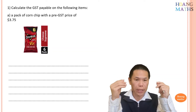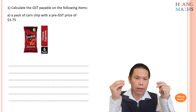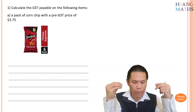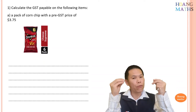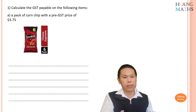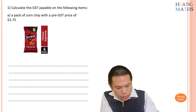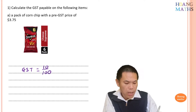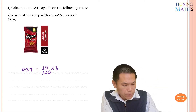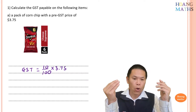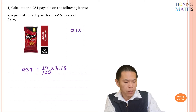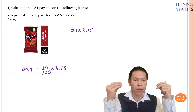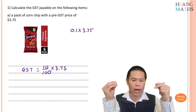The first example: calculate the GST payable on an item that costs $3.75. That price is before GST, so we need to work out how much tax we have to pay. GST is equal to 10 percent, which means 10 over 100, multiplied by $3.75. You can also write this as 0.1 times 3.75, since 10% equals 0.1.